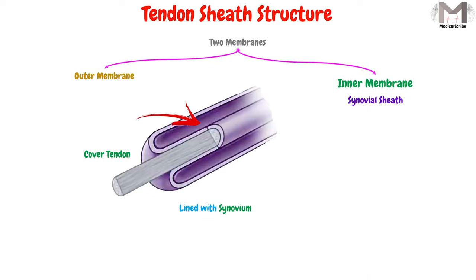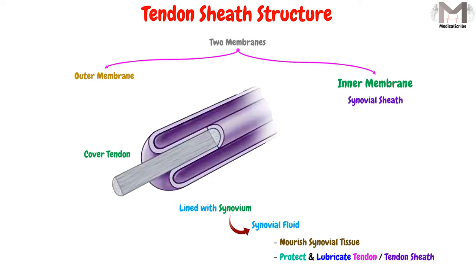The synovial sheath covers the tendon and is lined with synovium — that is, the internal surfaces of the synovial sheath are lined with the synovial membrane. As mentioned in the last video, the synovial membrane produces a fluid called synovial fluid, which nourishes the synovial tissue, protects and lubricates the tendons and tendon sheath, and allows the tendons to move smoothly.